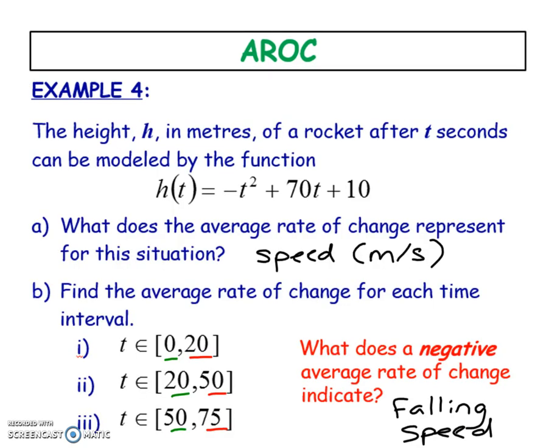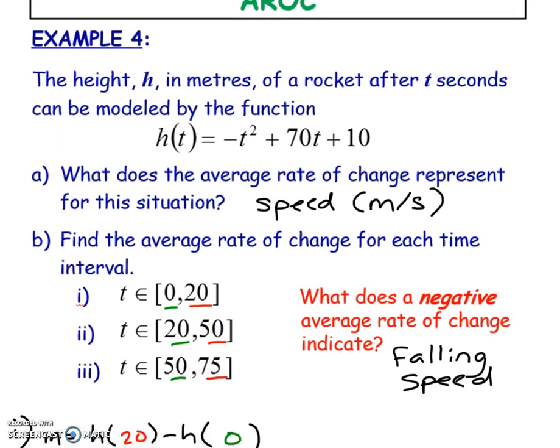The last thing, and the thing that you'll probably see the most, is if they give you a specific equation, then they tell you to find the slope or the AROC. We're talking about a rocket. This is a negative parabola. It's going to go up and then go back down. They want you to find the average rate of change, or the AROC, between 0 and 20 seconds, 20 and 50 seconds, and 50 and 70 seconds, and see what happens.